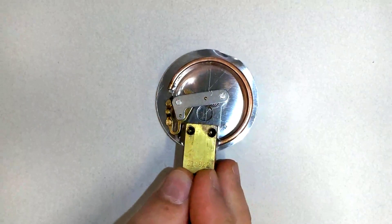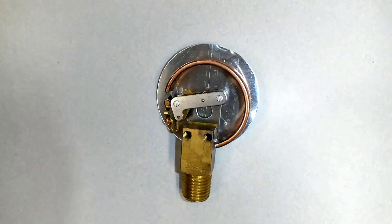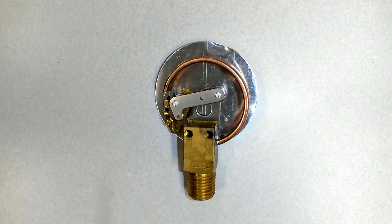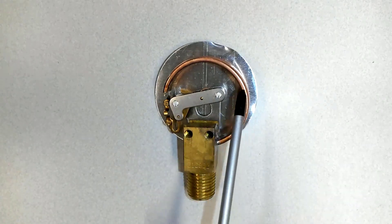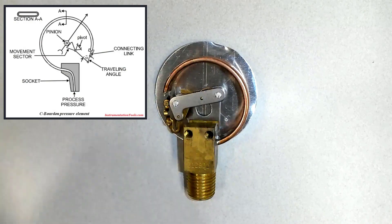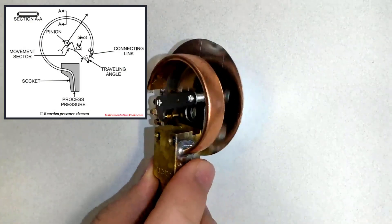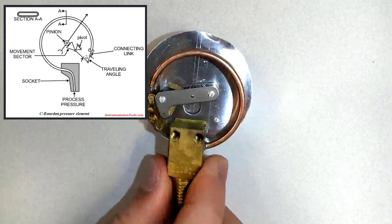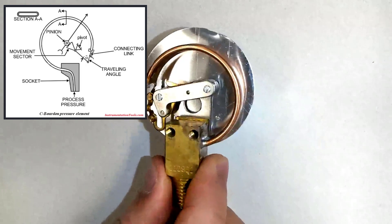The fluid, let's say water, goes in this direction into the gauge. This tube over here is called the Bourdon tube. It's a C-shaped curved tube that is hollow, so the fluid can go inside.